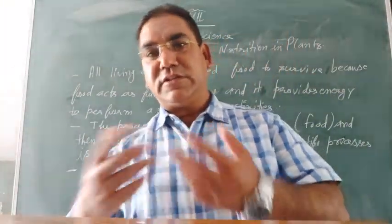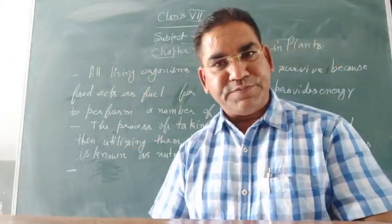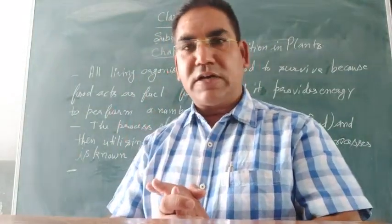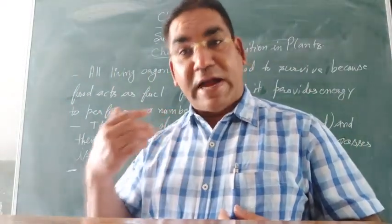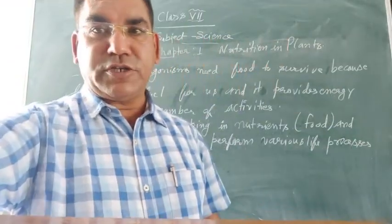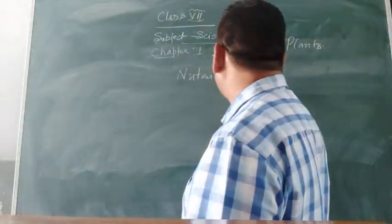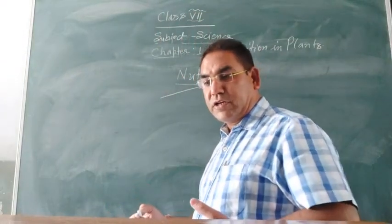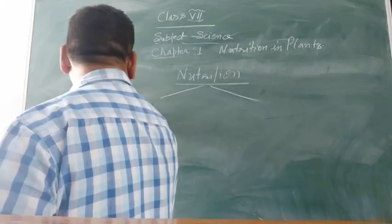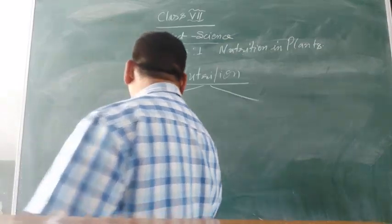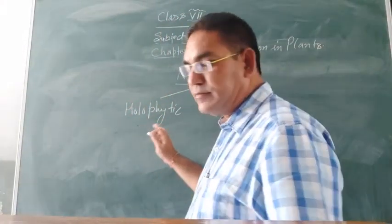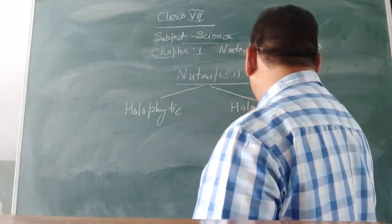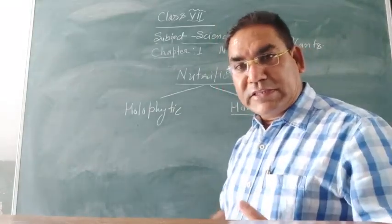When we discuss nutrition in detail, we will see that there are basically two kinds of nutrition occurring in various organisms. Number one: holophytic nutrition. And the second one: holozoic nutrition. Nutrition is basically of two types: holozoic nutrition and holophytic nutrition.